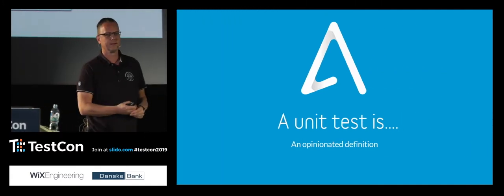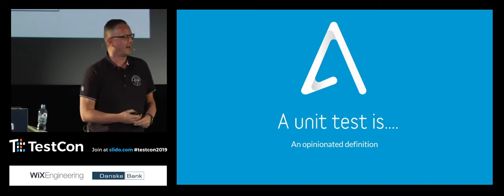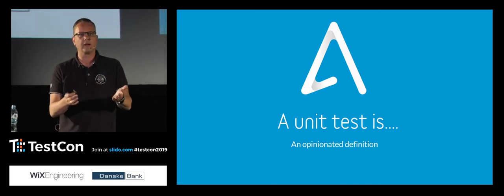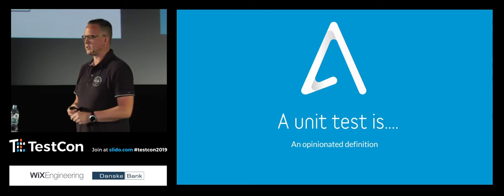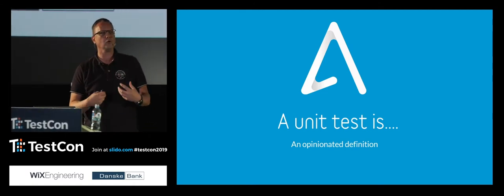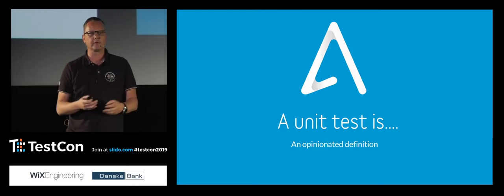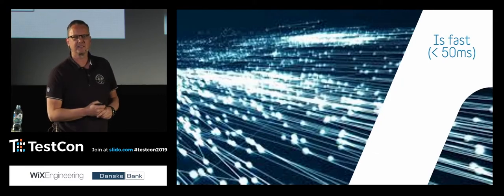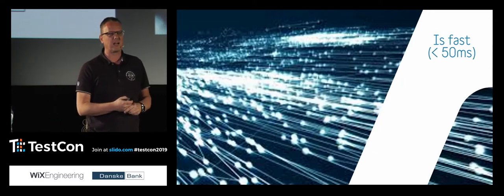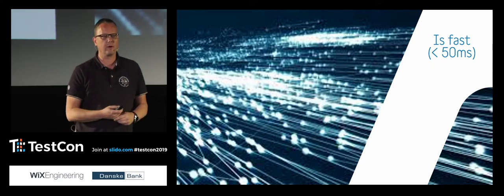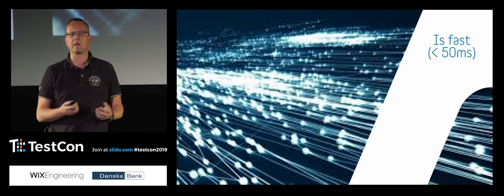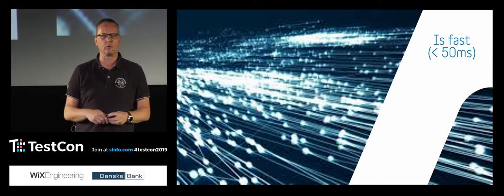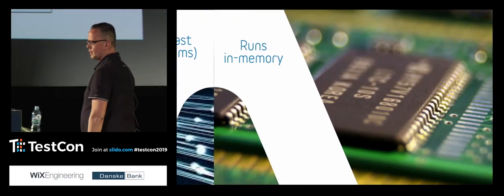What is a unit test? If you ask any developer, you probably get ten different opinions. I decided to do my own opinionated definition just to set the stage correctly. A unit test is fast — say, 15 milliseconds. I don't know if that's fast enough, it's kind of arbitrary, but fast is fast, especially if your code base has something like 2,000 or 10,000 unit tests. You don't want to wait ten minutes just to get them green. The feedback loop is really important.